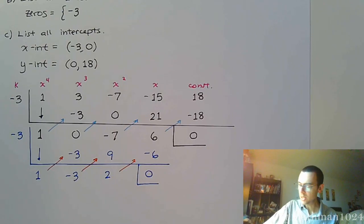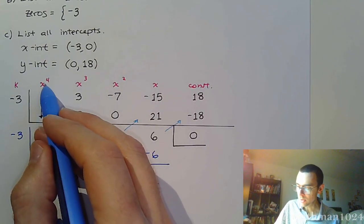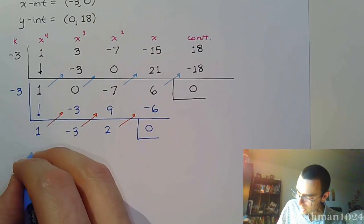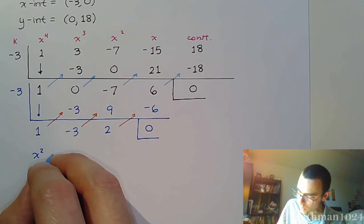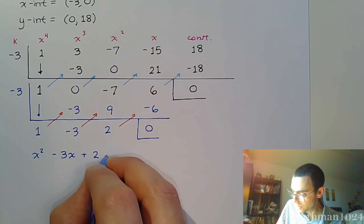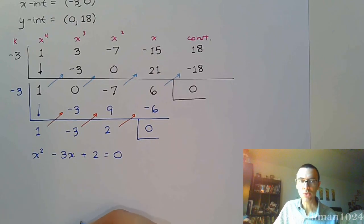Now, this piece right here, we go from x to the fourth, x to the third, to x squared. So that means we can take this guy in isolation and say this is x squared minus three x plus two equals zero, and once we solve this, that's going to finish answering the rest of our questions.